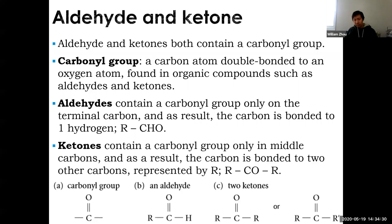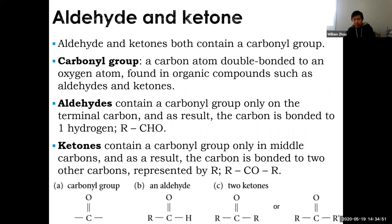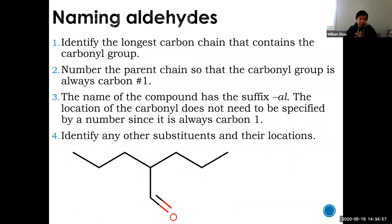For ketones, you still have a carbon with a double bond O, except it's on a middle carbon — that carbon has two other carbons bonded to it. The symbol is R–CO–R, where CO represents the carbon and the double bond O. That's how you tell the difference between aldehydes and ketones: it's basically the location of your carbonyl group.